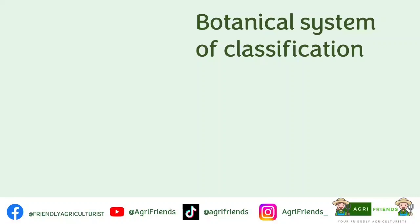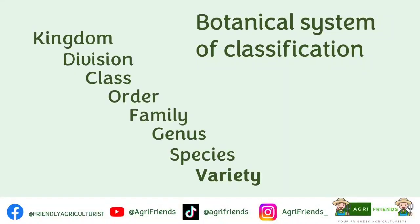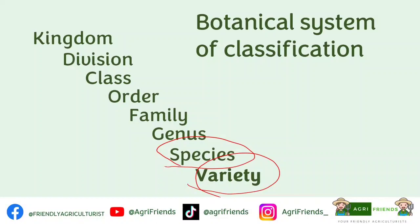The botanical system of classification is a hierarchical system. Plants are grouped from the largest to the smallest group. The largest group is the kingdom — plants are under Kingdom Plantae. The basic unit of classification is the species, while variety refers to the variation within a plant species.